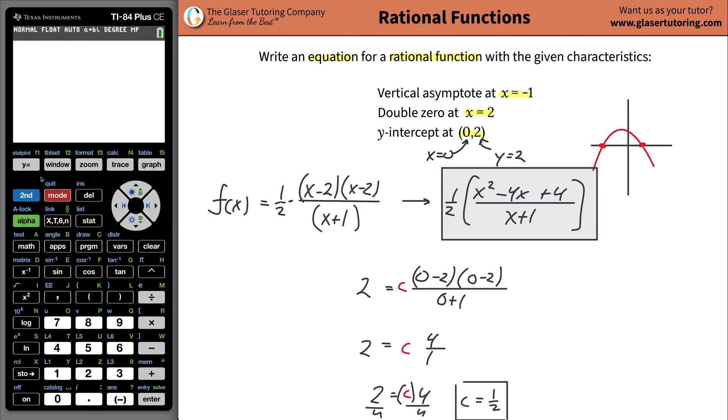You can use your calculator to graph it. I'm going to do one half times, open the parentheses, and now I'm going to do a double parentheses because I need to make sure the numerator stays in the numerator. So x squared minus four x plus four, close the parentheses, open them again, then x plus one on the bottom. Use those parentheses, close the double, and then hit graph. This is now the function.